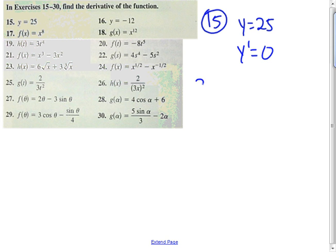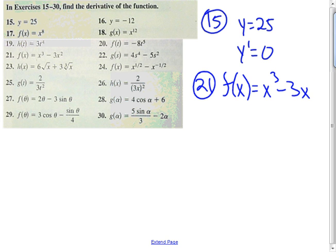We did number 21. On 21, we've got f of x is equal to x cubed minus 3x squared, and what we have here is just a difference, so we're just applying the difference rule, which tells me to take the derivative of each term and just subtract those derivatives of each term. So f prime of x is equal to...